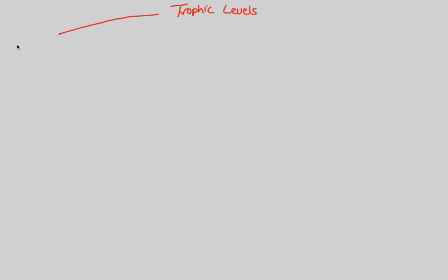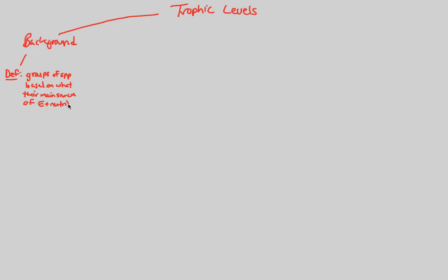To begin understanding trophic levels, let's get some basic background knowledge. A trophic level will include groups of species based on what their main sources of energy and nutrition are. We're looking at groups of species based on what their main source of both energy and nutrition are.